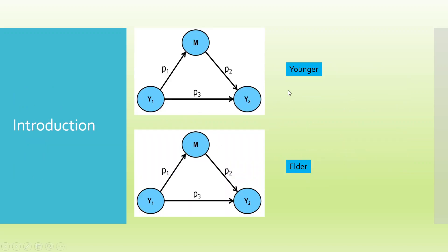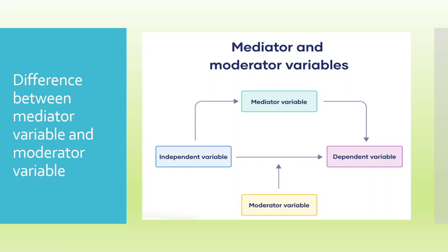If I say that this path p3 is different for the younger child and elder child, and if I consider younger and older, or male and female, or large-scale and medium-scale as moderators — here the relationship will be altered, and that is the difference between mediation and moderation. So the independent variable influences the mediator variable, the mediator influences the dependent variable, while the moderator variable alters the relationship.